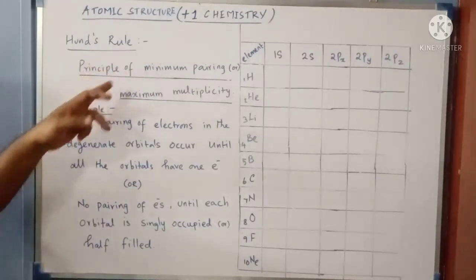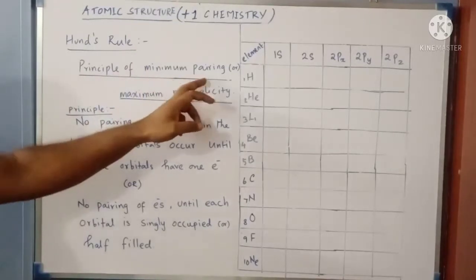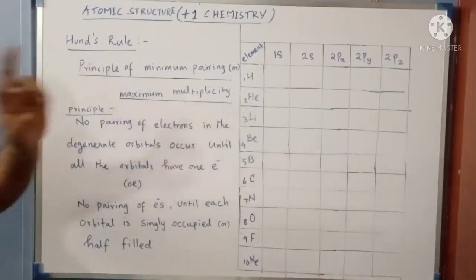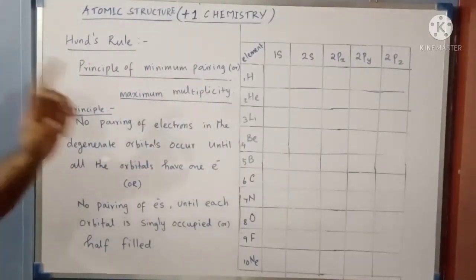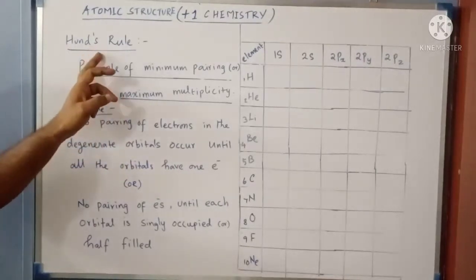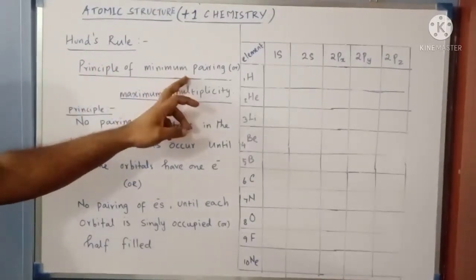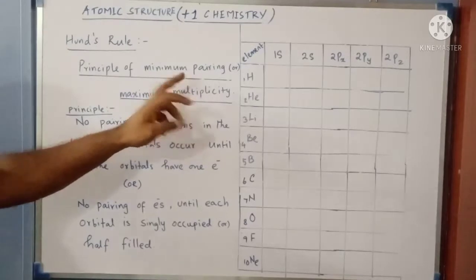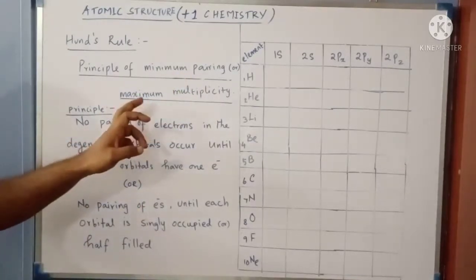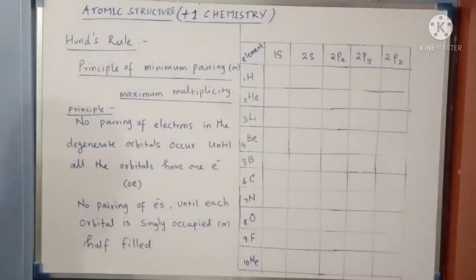Hund's Rule is also called as the Principle of Minimum Pairing or Principle of Maximum Multiplicity. In exams, they may ask the same topic as either Principle of Minimum Pairing, the Condition for Minimum Pairing of Electrons, or Principle of Maximum Multiplicity.